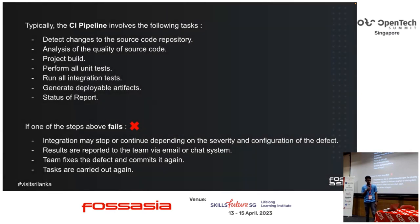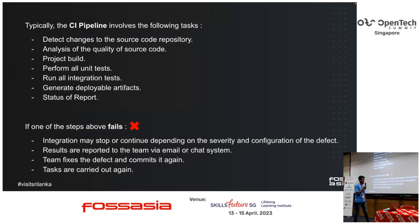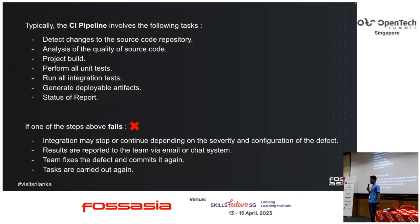Typically, the CI pipeline involves the following tasks: it detects changes in your source code, builds and generates the artifacts we need to deploy, and performs basic tests such as unit tests and integration tests. You can have a status report — for example, if you have a code checker, it will show the percentage of your coverage. And if any of the above steps fail, it will notify the relevant team so you can look and fix the issues.